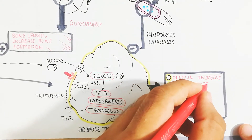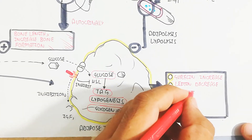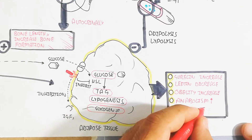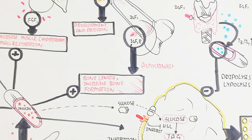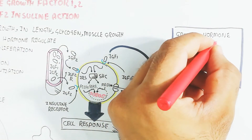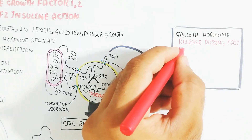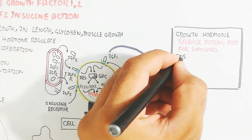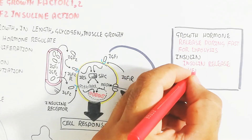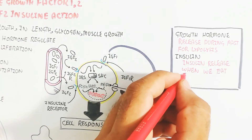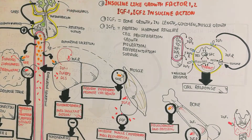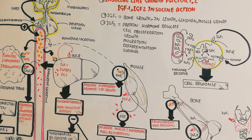Ghrelin increases, leptin decreases, obesity increases, and anabolism increases — leading to increased adipocyte formation and more hunger. Eating more sugar leads to more hunger due to hunger stimulation. Growth hormone is released during fasting for lipolysis, while insulin is released when we eat food and hyperglycemia occurs.